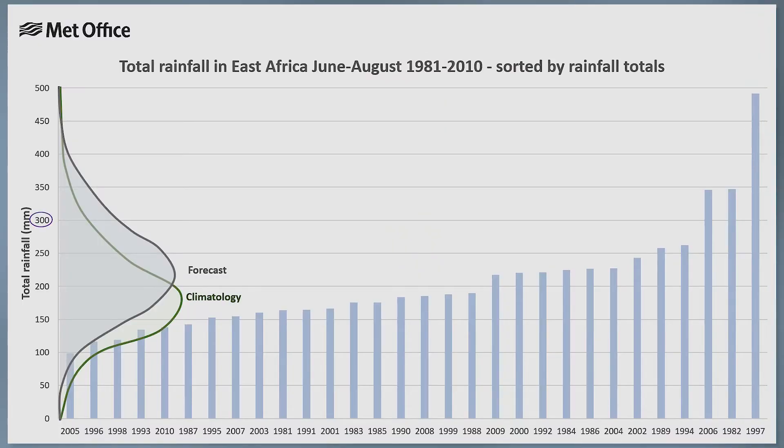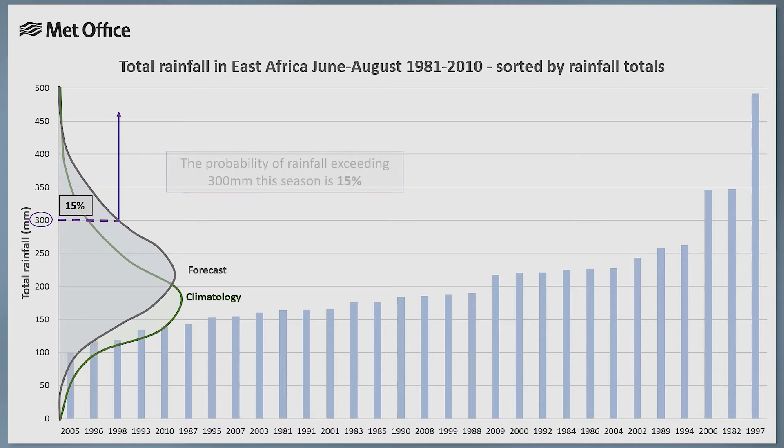The context for using this information might therefore alter how the forecast should be communicated. As well as terciles, there may be specific fixed trigger values or thresholds that are important for decision makers. The output of seasonal forecasts can be processed to display the probability of those thresholds being exceeded. For example, if seasonal rainfall over a threshold of 300 mm may lead to damaging impacts on crops, the forecast might show a 15% chance of reaching that threshold in the next season — which is more likely than average.